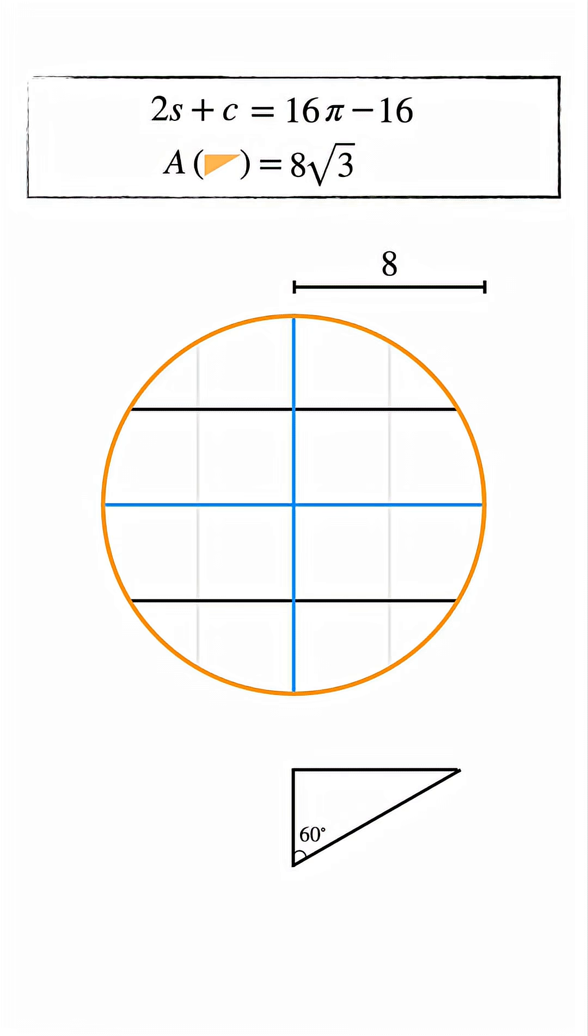Because the figure is symmetric, we can mirror this triangle to form a larger isosceles triangle. Its area is twice the area of the right triangle, which gives us 16 square root 3. Set that aside.